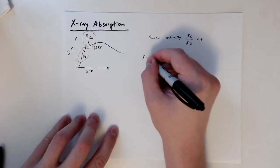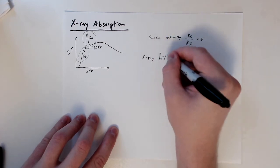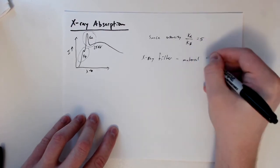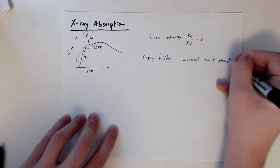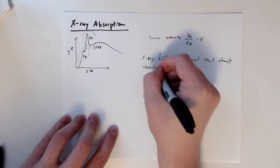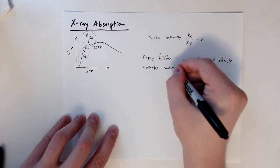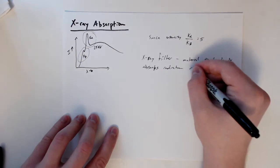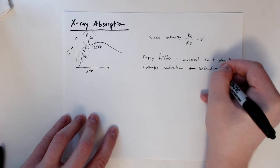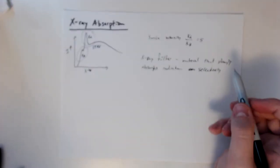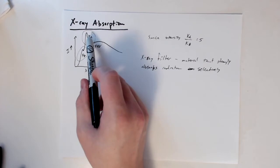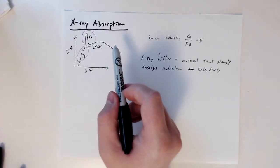What we want to do is use a material called an x-ray filter. This is a material that strongly absorbs radiation, but it does it selectively. It absorbs some radiation more strongly than others. We want to basically absorb all the K-beta and let K-alpha go through.